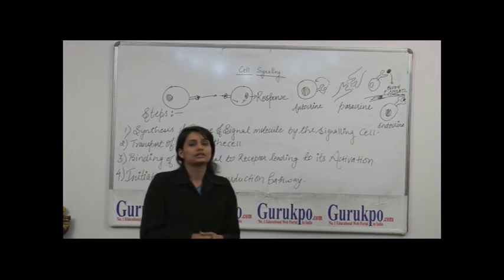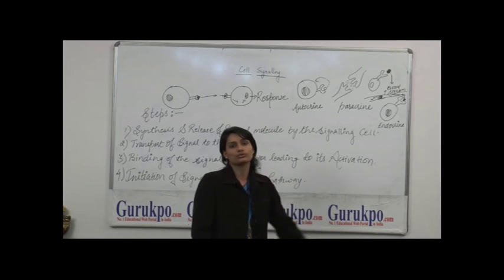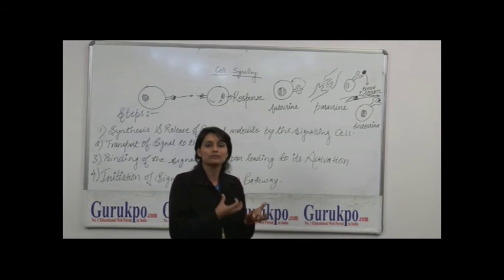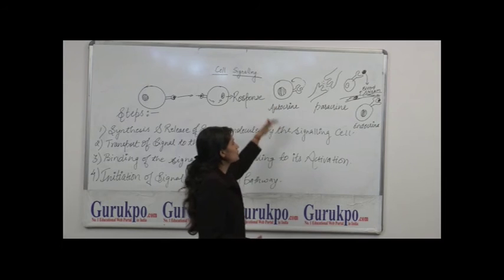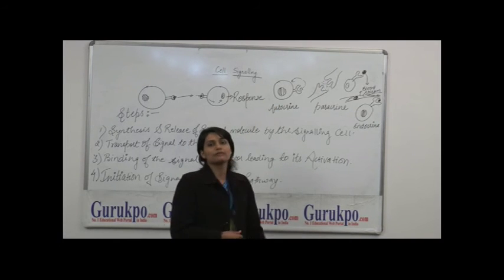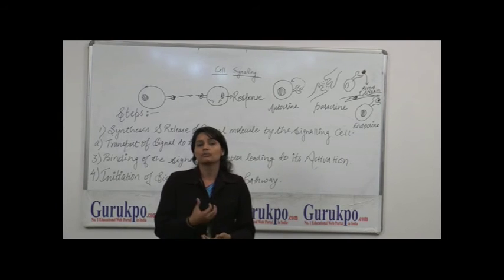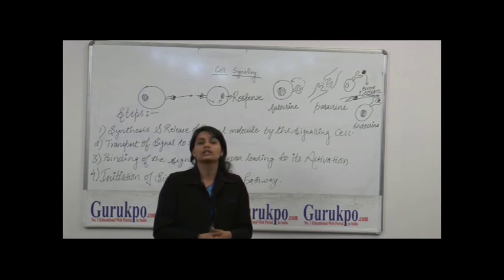Now let's come to the types of signaling. There are three types of cell signaling. First, autocrine, paracrine, and third is endocrine. Autocrine is basically when a particular signaling cell produces a signal molecule which binds to itself and then produces response. Example of this type of signaling is when any foreign antigen enters into our body and our immune system responds to the particular foreign antigen.